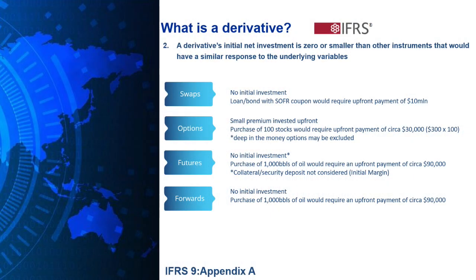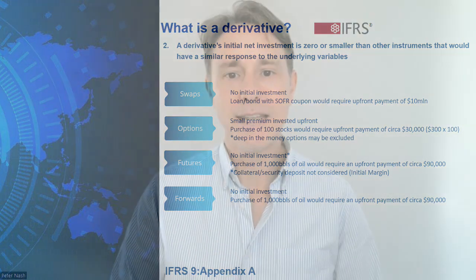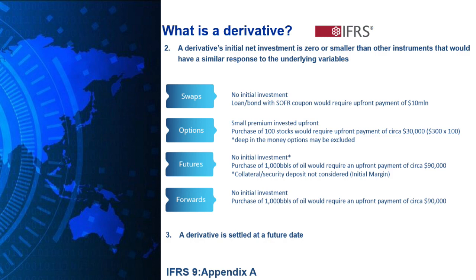For futures, there's no net initial investment. With the accounting treatment, we don't have to consider any collateral paid to trade on the exchange, like initial margin. If we look at an instrument with a similar response to the futures contract of 1,000 barrels of oil, buying 1,000 barrels outright would cost around $90,000 — so the futures contract has a smaller net initial investment. Forwards are the same; there's no net initial investment. That brings us to the third and final attribute: the derivative has to settle at a future date — it can't have already settled.